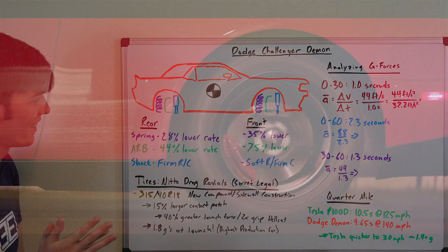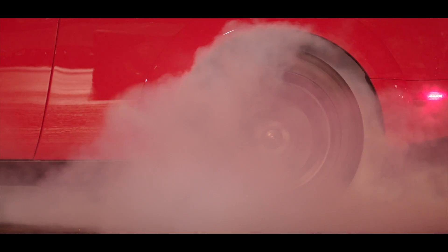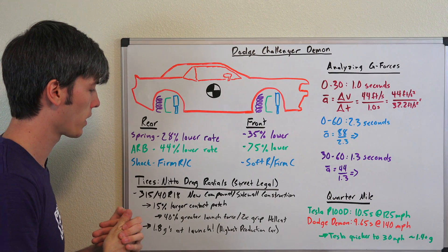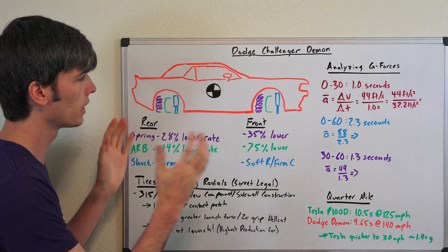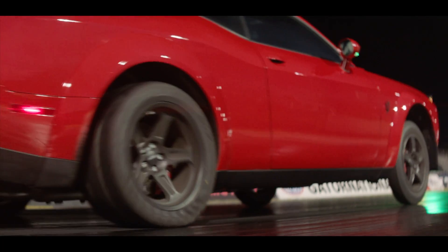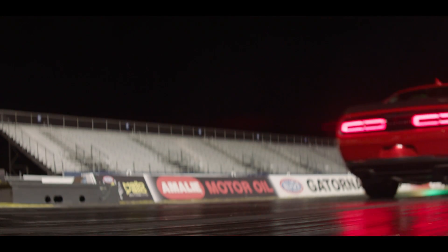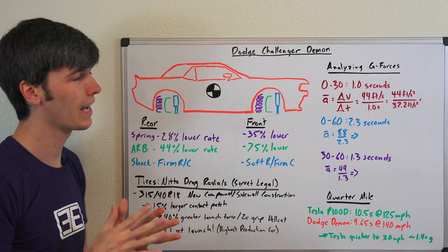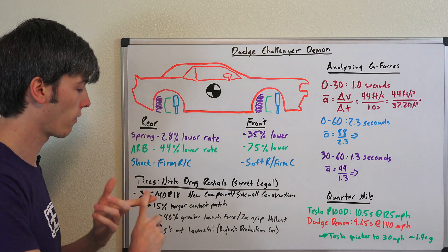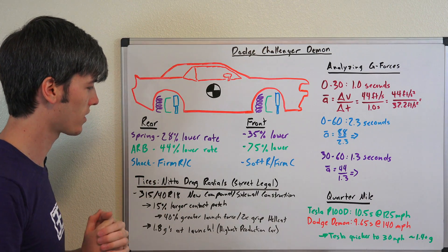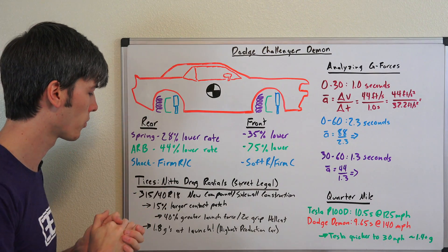Now as far as the tires, these are street legal Nitto drag radials. This is a production first for production vehicle to have drag radials. They're 315s over 40, the compound and sidewall construction completely unique to this vehicle. You can see the tire twisting as it's launching like you see in NHRA top fuel cars. It's got a 15% larger contact patch versus the Hellcat, able to achieve a 40% greater launch force and supposedly has over 2 times the grip of the Hellcat with these tires.